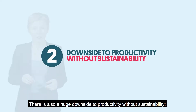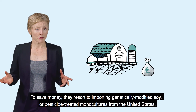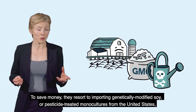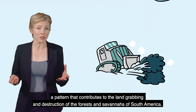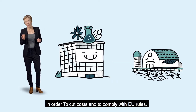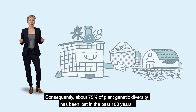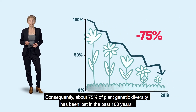There is also a huge downside to productivity without sustainability. Farmers with less land have to produce more to make a profit. To save money, they resort to importing genetically modified soy or pesticide-treated monocultures from the United States, a pattern that contributes to land grabbing and destruction of forests and savannahs of South America. In order to cut costs and to comply with EU rules, farmers are forced to buy seeds from a handful of powerful agrochemical corporations. Consequently, about 75% of plant genetic diversity has been lost in the past 100 years.